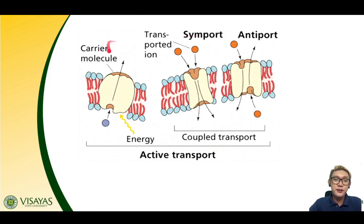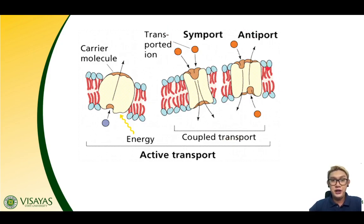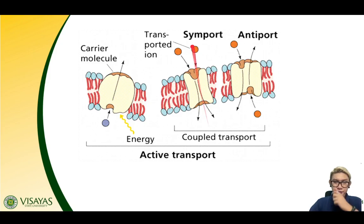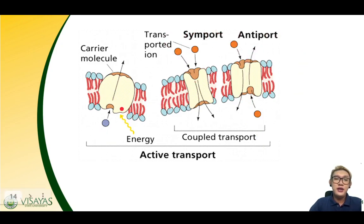Active transport can also use ion gradients to co-transport some molecules. If there is an ion gradient, the target molecule can be transported together with the ion — this is called symport — or transported in the opposite direction — called antiport. A uniporter can be active or passive depending on whether energy is expended.